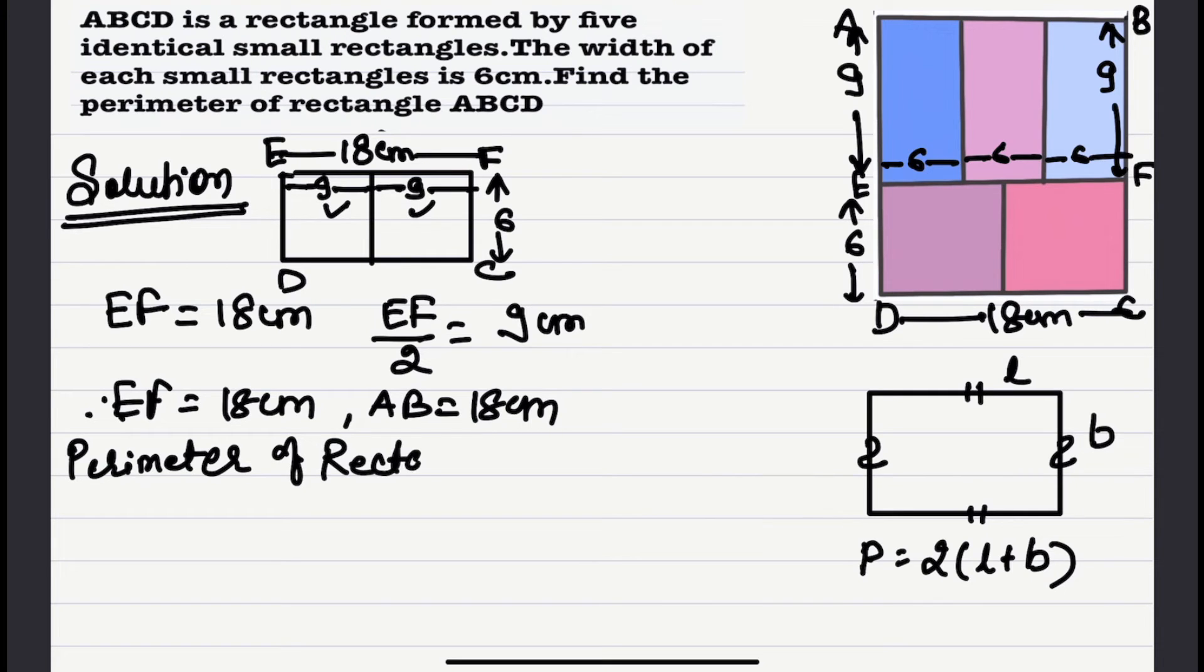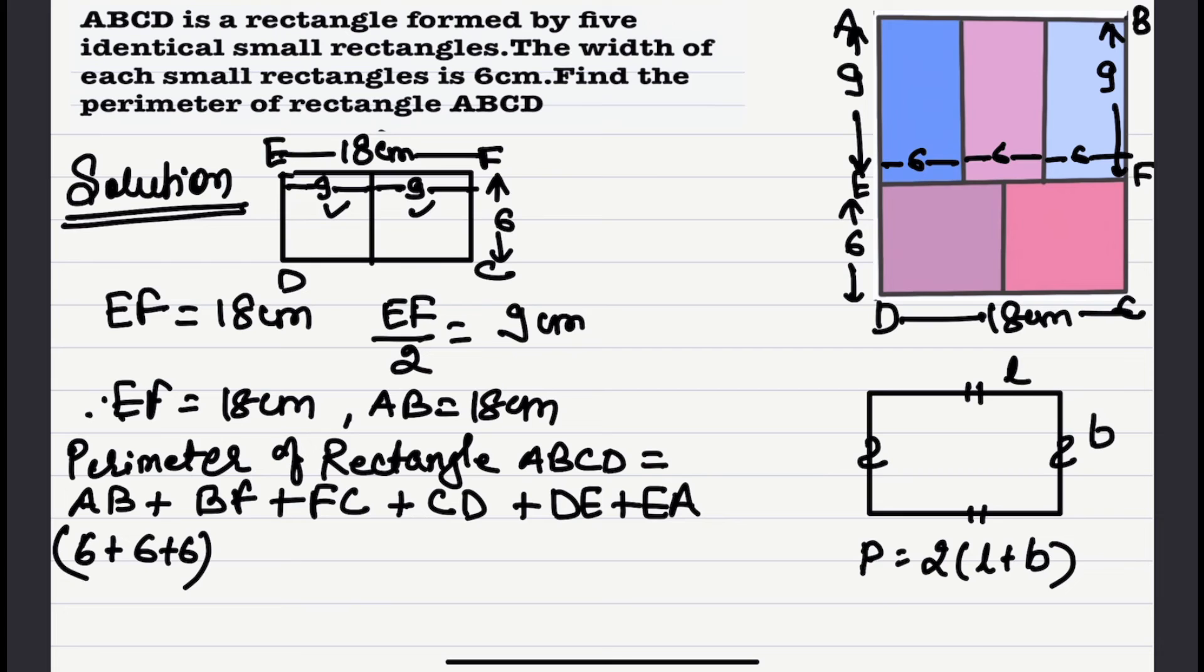So perimeter of this figure rectangle ABCD can be written as AB plus BF plus FC plus CD plus DE plus EA. BF as length calculated as 9, CF 6 it is given, plus CD which is 9 plus 9, plus ED which is 6, and EA which is 9. So on summing this comes out to be 66 centimeters.